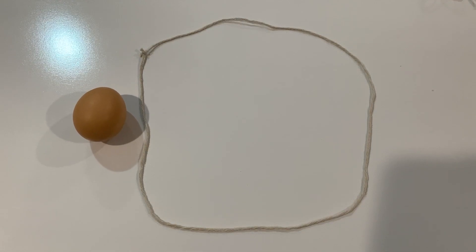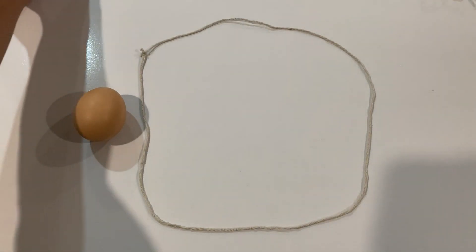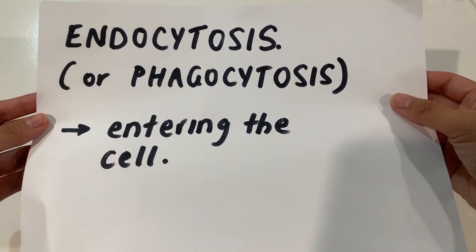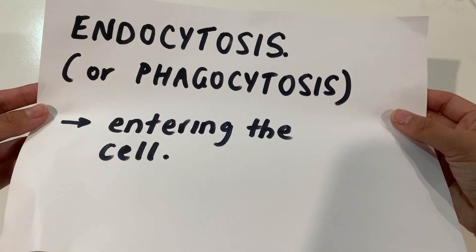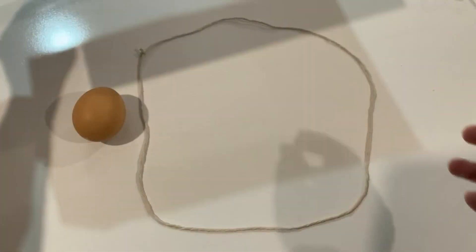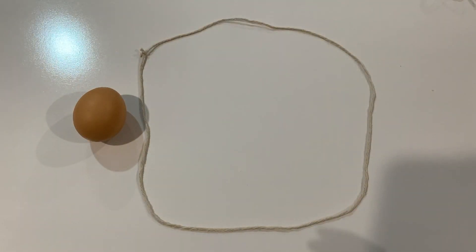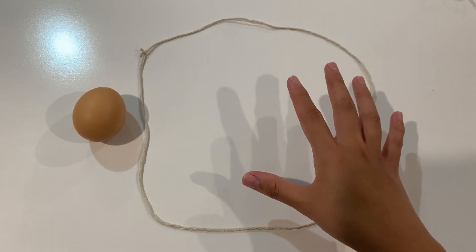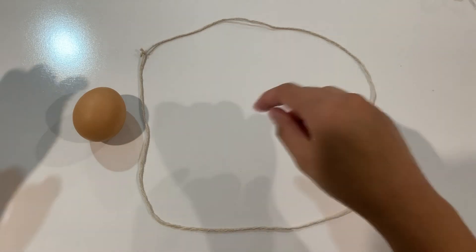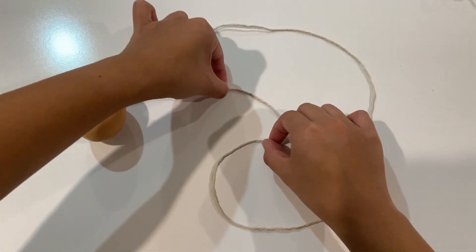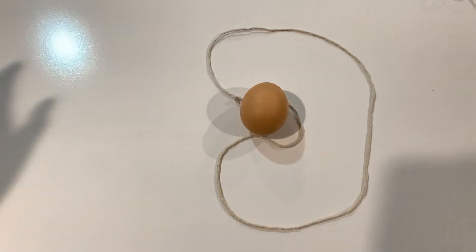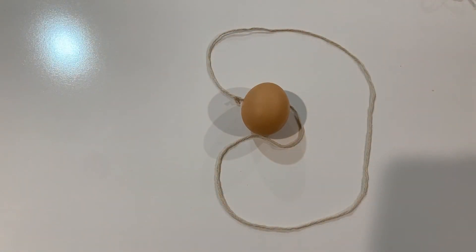So the answer is endocytosis, also called phagocytosis — there are two names for it. It basically means that this large object can enter the cell not through diffusion but through another process. What happens is the cell membrane is able to change its shape and it wraps itself around the large substance like this.